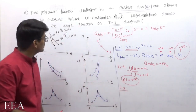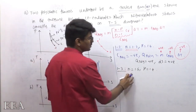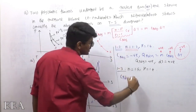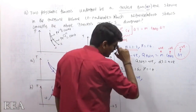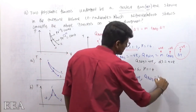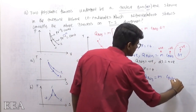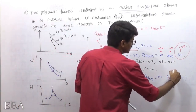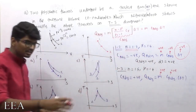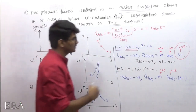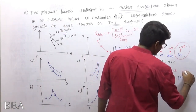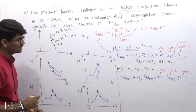Now for the 1→3 process: n = 1.5 and gamma = 1.4. Since n > gamma, (n − gamma) is positive and (n − 1) is positive, so c_poly is positive. It's also an expansion process — volume increases, pressure decreases — so temperature decreases and ΔT is negative.